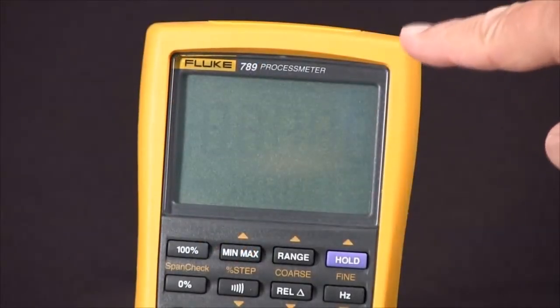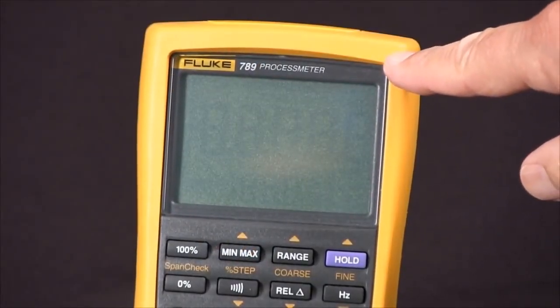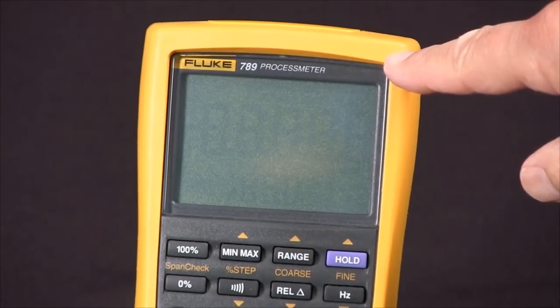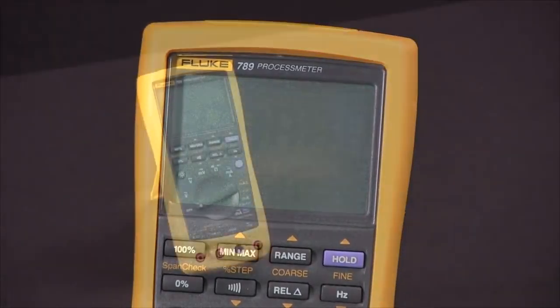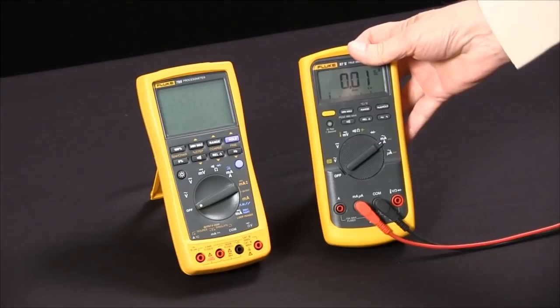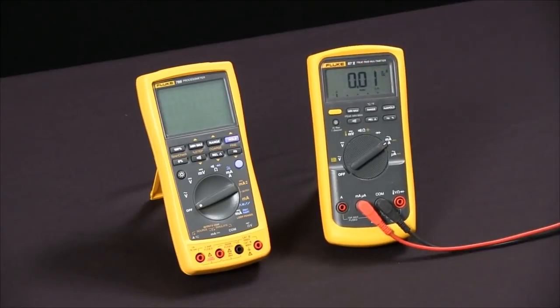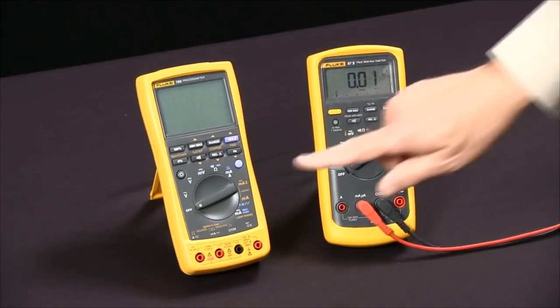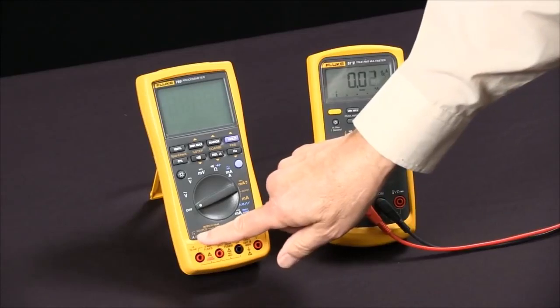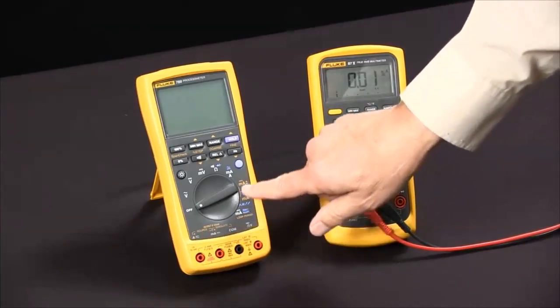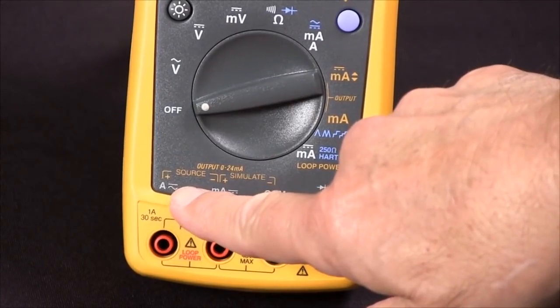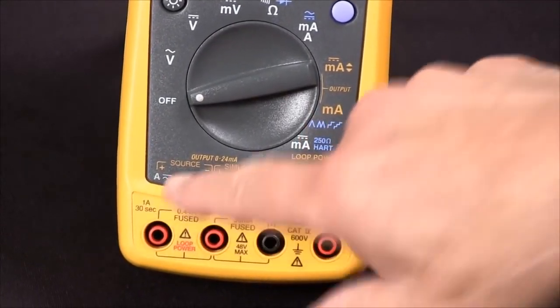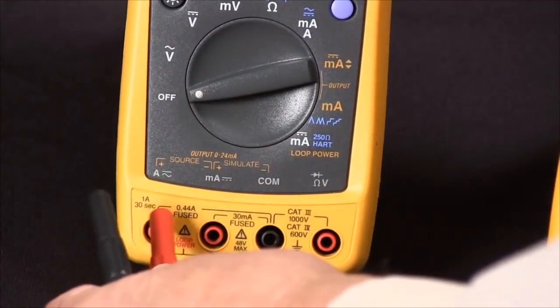To source 4 to 20 milliamps DC current with our Fluke 789 process meter, we're going to use a digital multimeter to measure the current that we're sourcing. If you'll notice, everything that has to do with sourcing is in orange. We're going to come over here to the source plus and minus output and attach our meter.